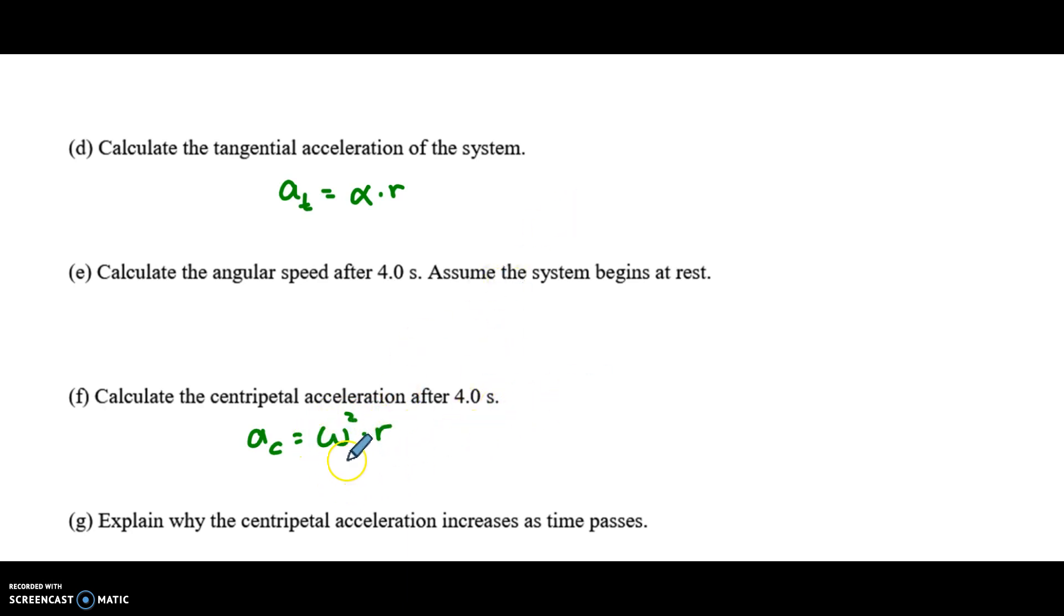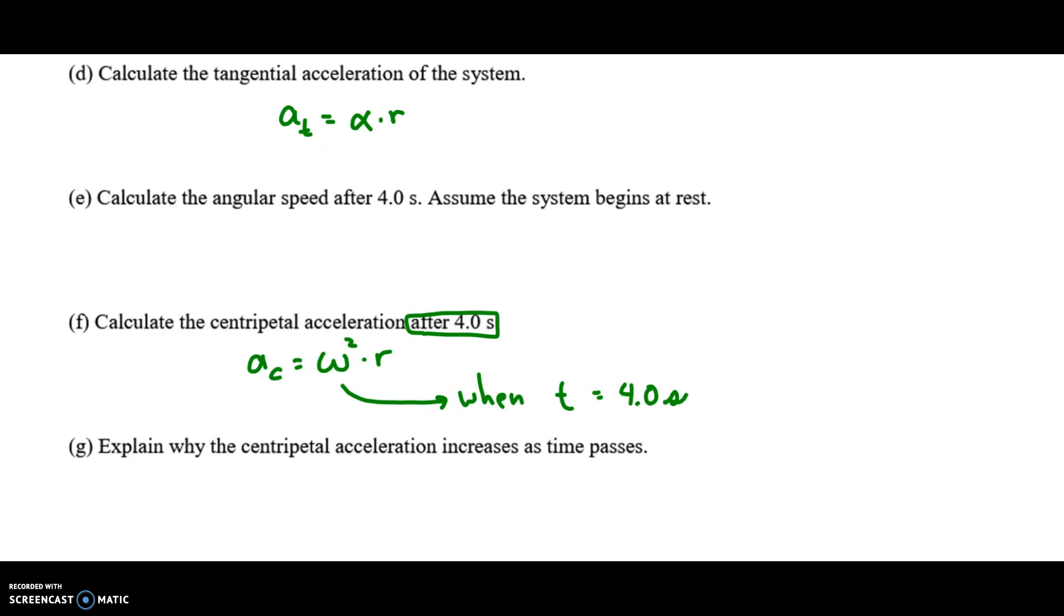Now, here's the thing. You need to know the omega when t, the amount of time that has passed, when t is 4 seconds. So, you know, if your omega is increasing because we're accelerating, then the centripetal acceleration, that increases too.